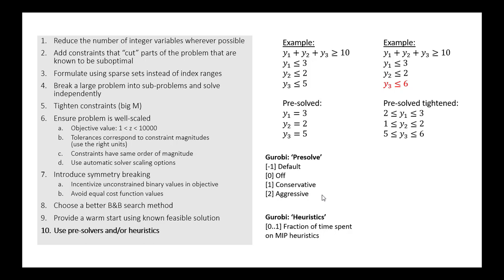So practically what that would look like is if I were to set aggressive pre-solve, I'm going to spend more time waiting for the branch-and-bound solver to start than I would if I used a conservative or turned off pre-solve altogether.